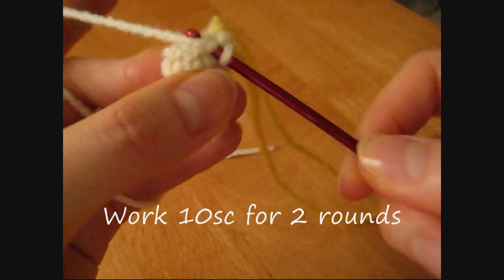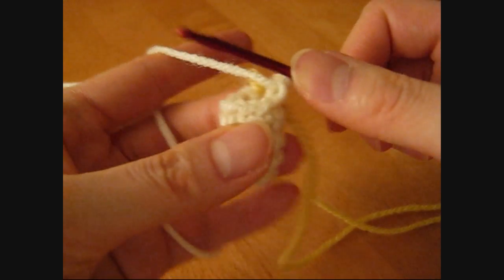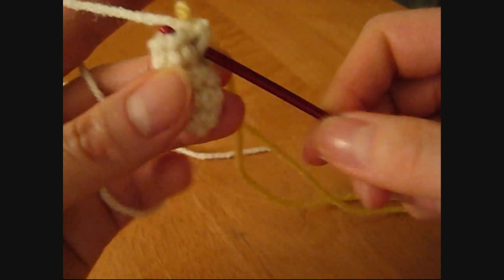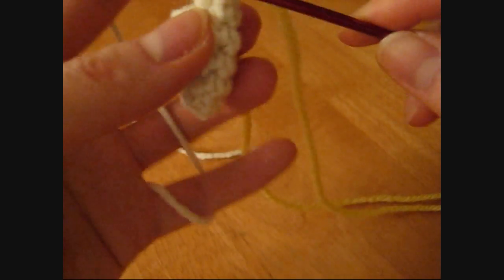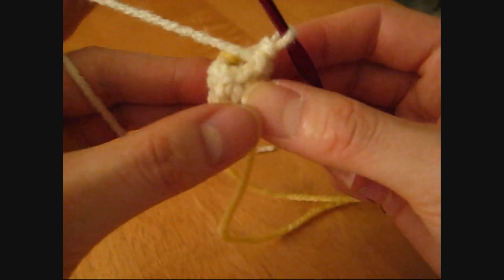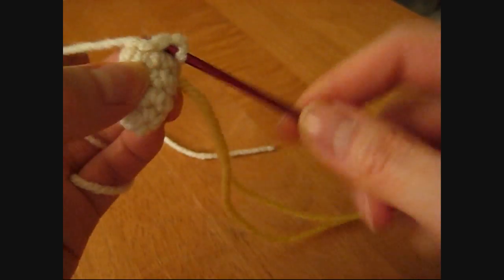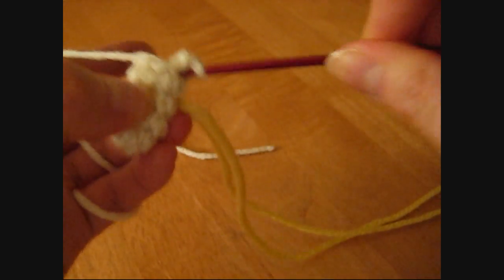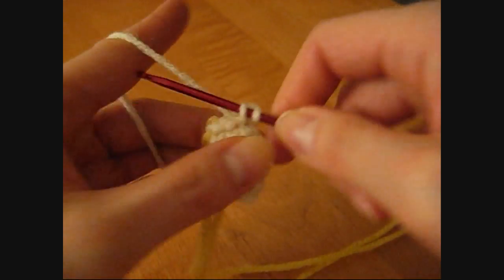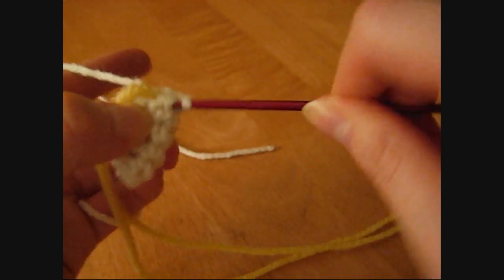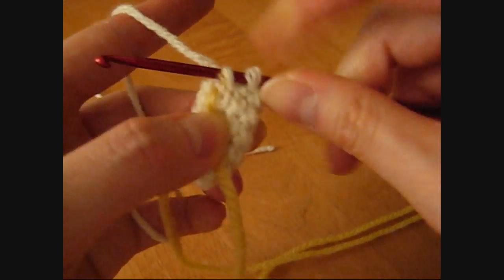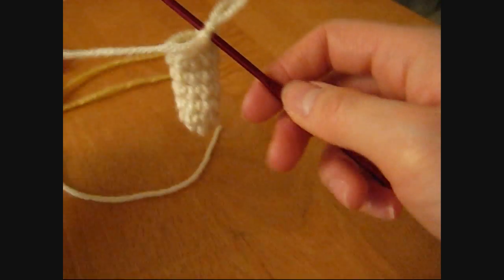Next, do 1 single crochet in each of the 10 stitches. Do this again for the next row. So you should end up with 2 rows with 10 stitches.